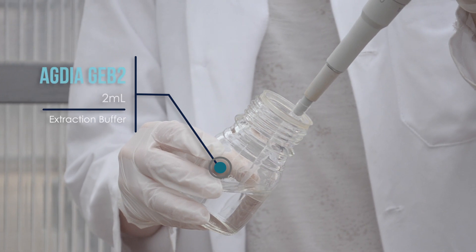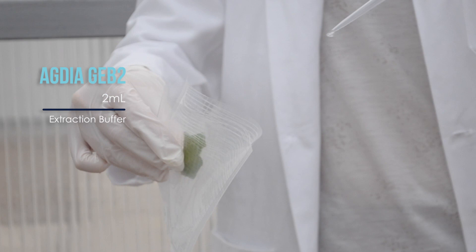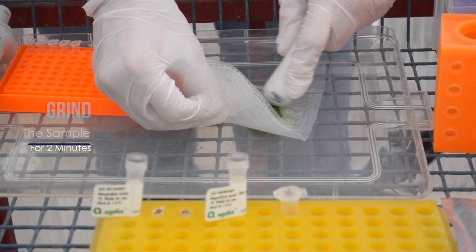Now, you're going to add two milliliters of Agdea's GEB2, which is an extraction buffer. Take a blunt object and grind the sample for about two minutes.